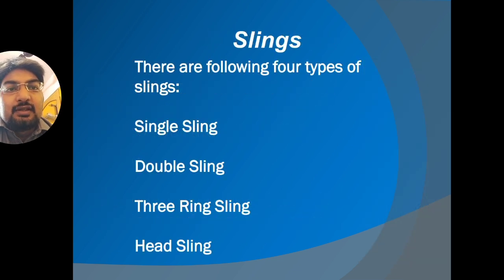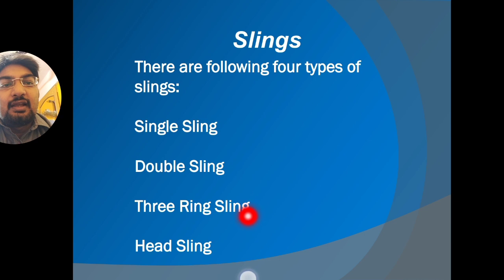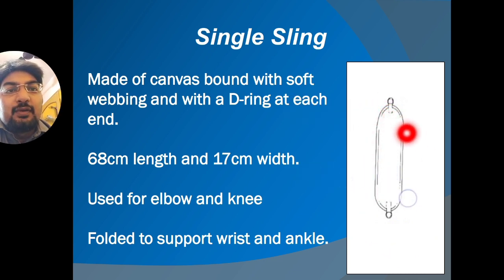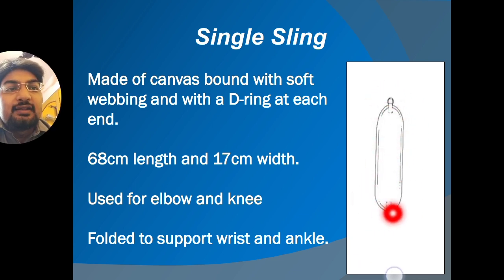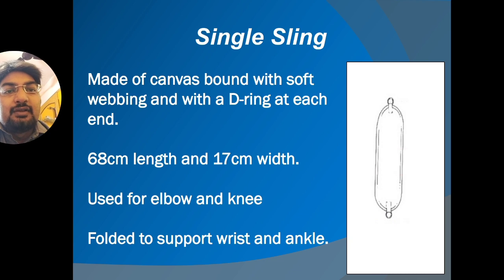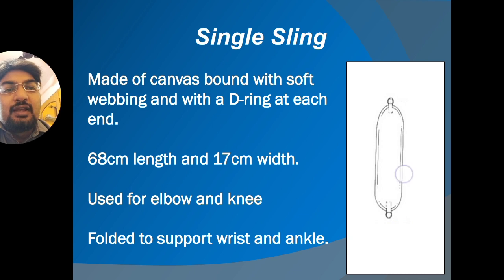Slings come in four types: single sling, double sling, three-ring sling, and head sling. The single sling is made of canvas bound with soft webbing, with a D-ring at each end. It measures 68 centimeters in length and 17 centimeters in width. It is used mainly for supporting smaller joints such as the elbow and knee, and can be folded to support the wrist and ankle.